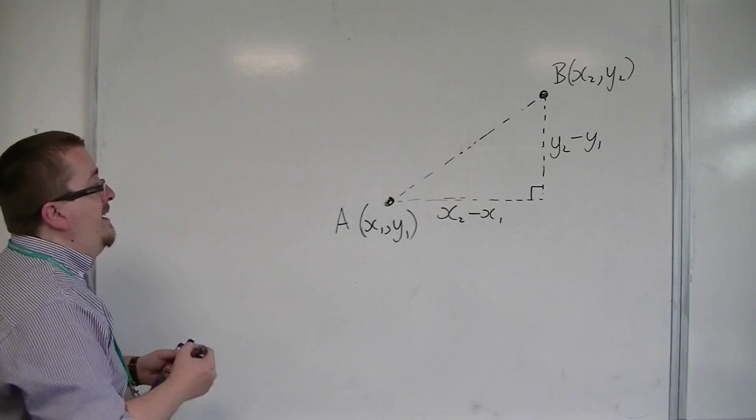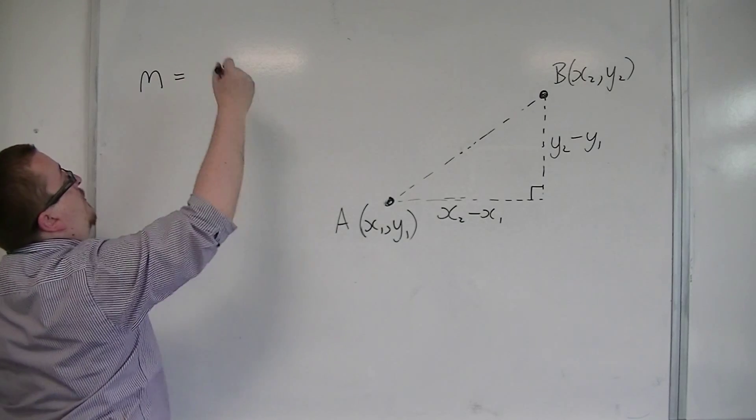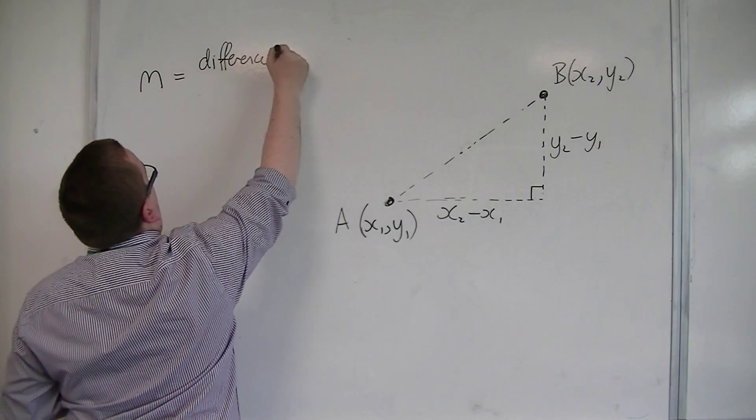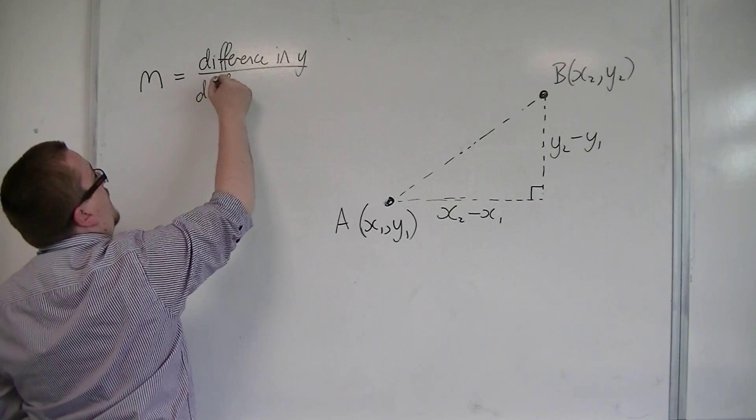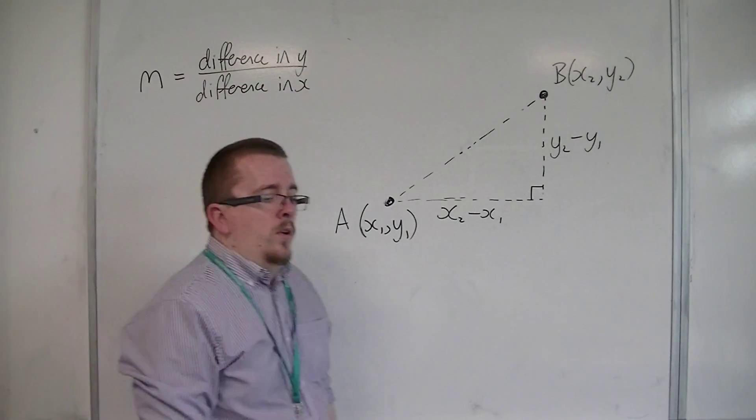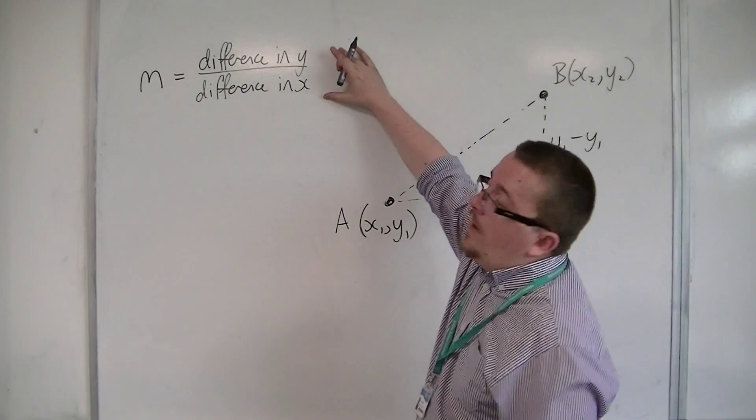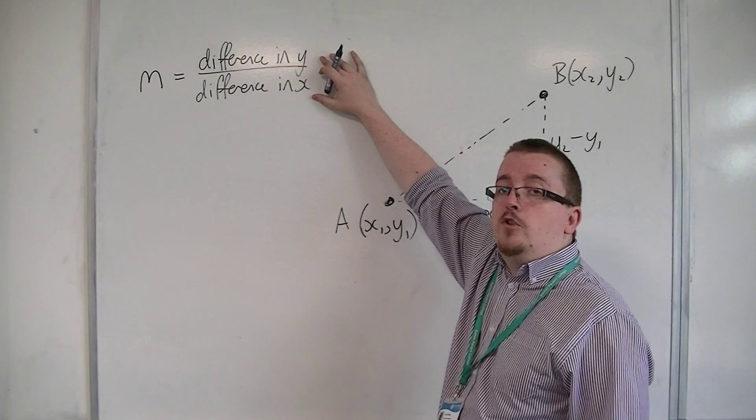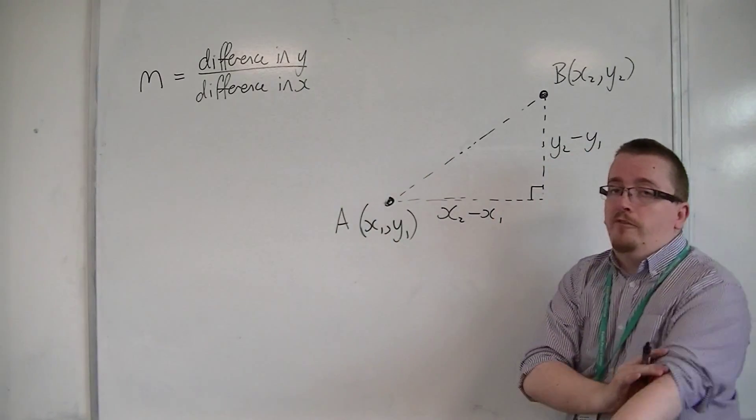Then to find the gradient, which I'm going to represent with an M, we find the difference in the y-coordinates divided by the difference in the x-coordinates. This is referring to dy by dx. dy by dx is something that we meet in core 2, called differentiation, which you may have met before.